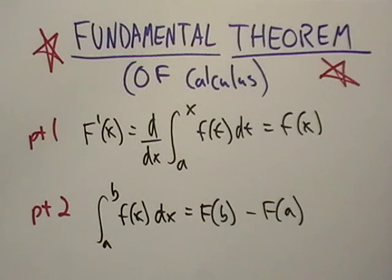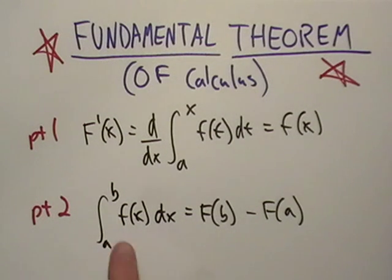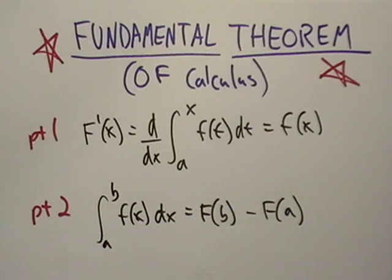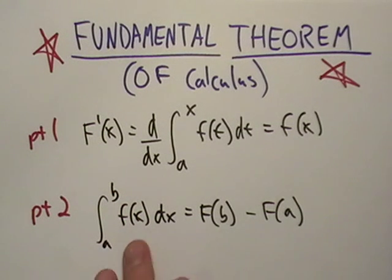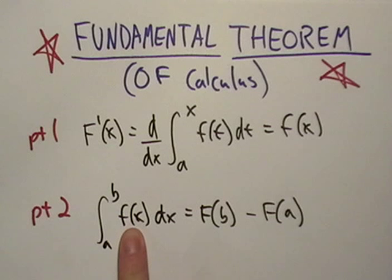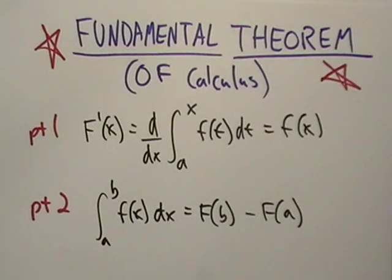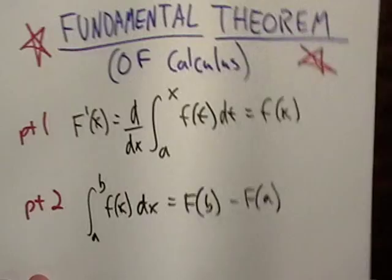Part two basically says we know how to take the antiderivative of a function. Had A and B not been there, we'd just find big F plus C. What we're going to do here is evaluate an integral over some type of interval. It's a simple formula — it's just the antiderivative of B minus the antiderivative of A. So we just find the antiderivative of the function and plug B minus A in.